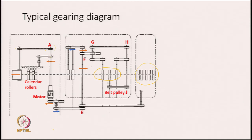From here the motion goes through this pulley to the set of kinder rollers. The direction of rotation of this shaft is the same. The way the pulleys and the belt driving these pulleys are also shown here. If we compare, this pulley is rotating in one direction, but this pulley is rotating in the opposite direction.